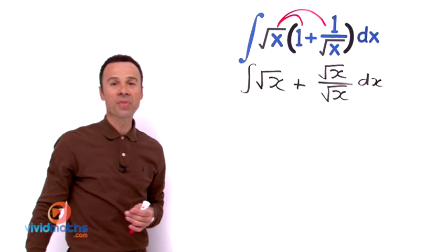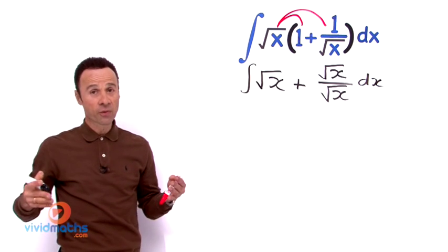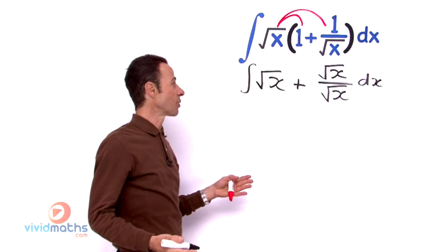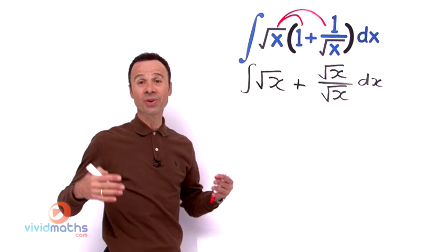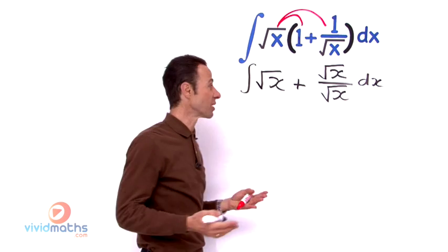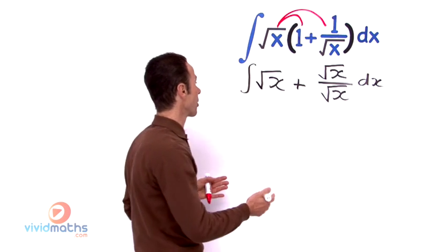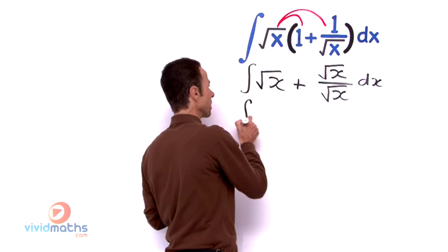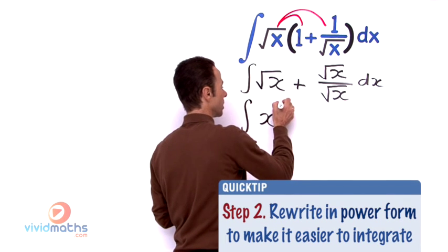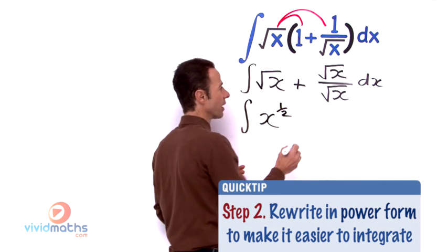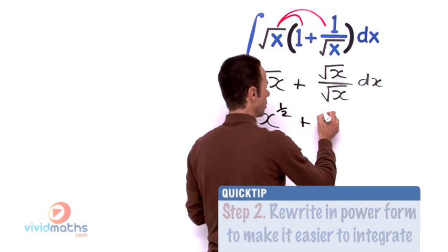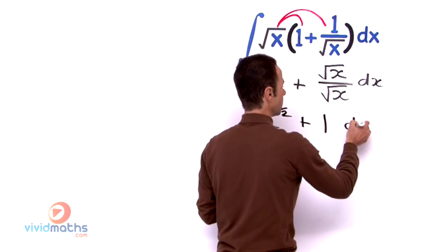Now we want to put it in a form that is integration friendly so we can integrate easily and usually we want to use exponents and powers. So it is going to become integral of x to the power of a half plus 1 dx.